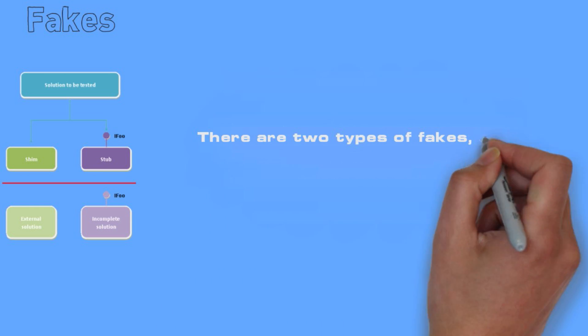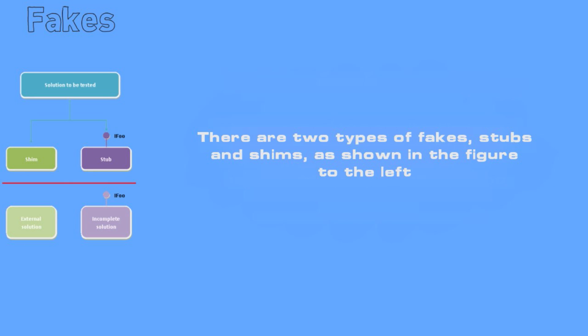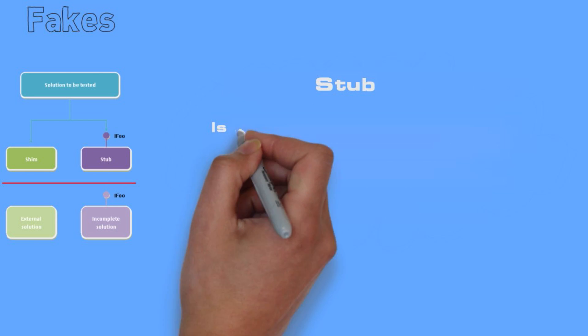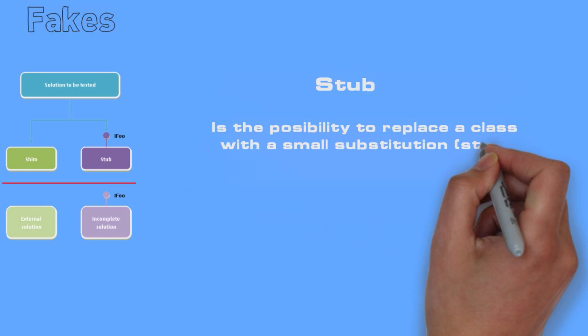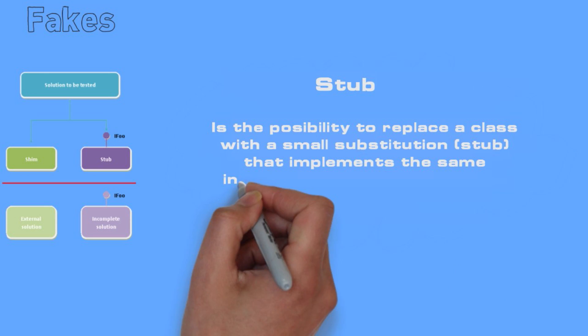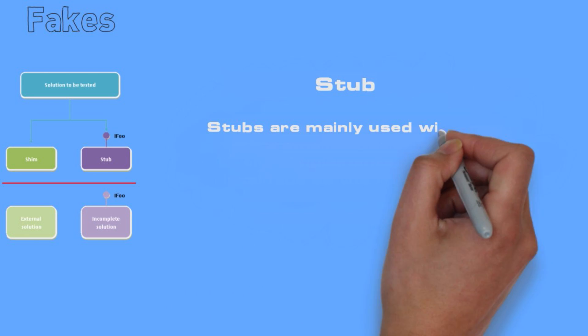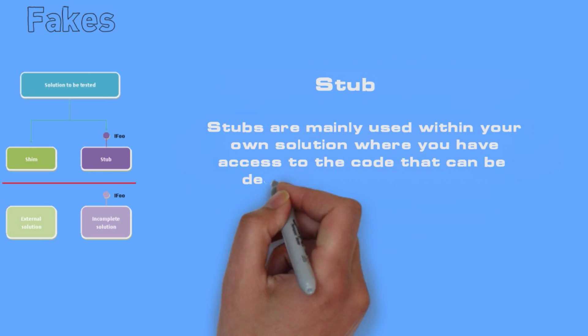There are two types of fakes: stubs and shims. Stub is the possibility to replace classes with a small substitution that implements the same interface as the replaced class. Stubs are mainly used within your own solution where you have access to the code that can be decoupled using interfaces.